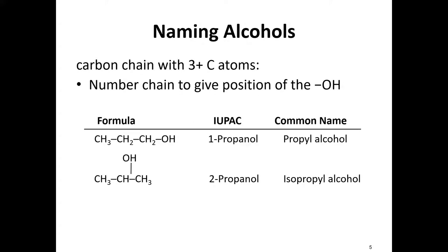When we get to three or more carbons, we need to note the position of the OH group, numbering from the end closest to it. For propanol, both options have three carbons, so they're both propanol — but if the OH is on the end carbon, it's 1-propanol; if it's in the middle, it's 2-propanol.